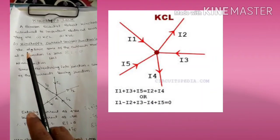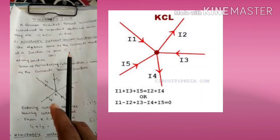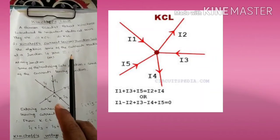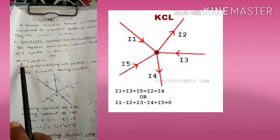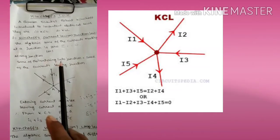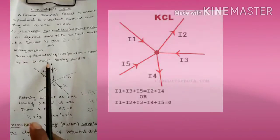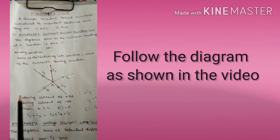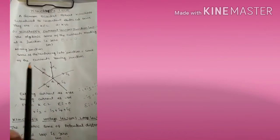The Junction Law states that the algebraic sum of the currents meeting at a junction is zero — that is, Sigma I equals zero. In other words, at any junction, the sum of the currents entering the junction is equal to the sum of the currents leaving the junction.